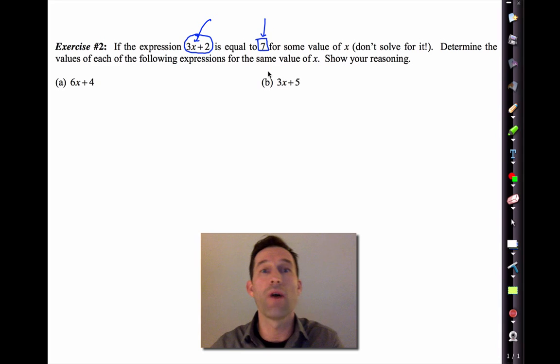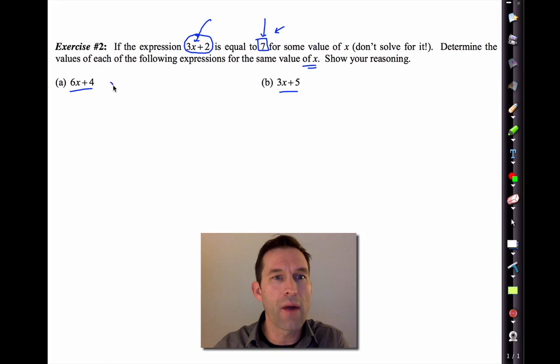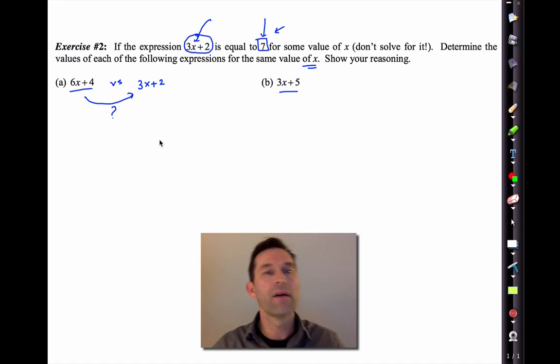Alright, now I don't want you solving for x, even if you know how, because that will miss the point of the exercise. Don't get me wrong, it's great if you can solve for x, but don't do it. What I want to do is I want to determine the value of this expression and this expression for the same value of x that gave me 7. Alright, and I want to do this by using a mindful manipulation. So take a look at 6x+4 and compare it to 3x+2. How do these two compare? Think about that for a moment. Pause the video if you need to. Did you figure it out?